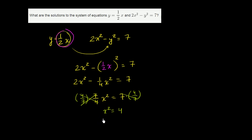And so x could be positive or negative 2. It's the positive and negative square root of 4. So x is equal to the plus or minus square root of 4. x is equal to positive 2 or negative 2.